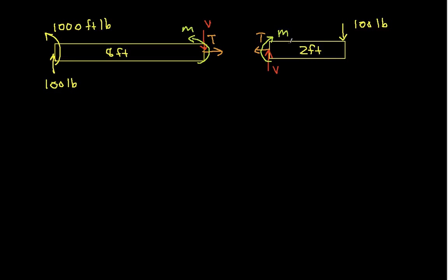Okay, so let's go ahead and find using first this free body diagram, let's find T, V, and M. Well T, if we sum all the forces in the x direction, the only force in the x direction is T, so that says T has to be equal to 0. If we sum the forces in the y direction, we have 100 pounds minus V is equal to 0, which says that V is equal to 100 pounds.